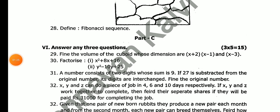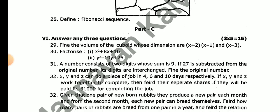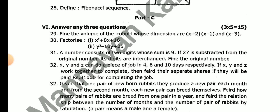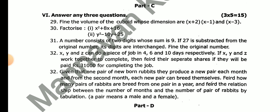5 mark questions — find the value of the cube; factorize x square plus 8x plus 16; factorize y square minus 10y plus 25. A number consists of two digits whose sum is 9; if 27 is subtracted from the original number, the digits are reversed — find the original number.